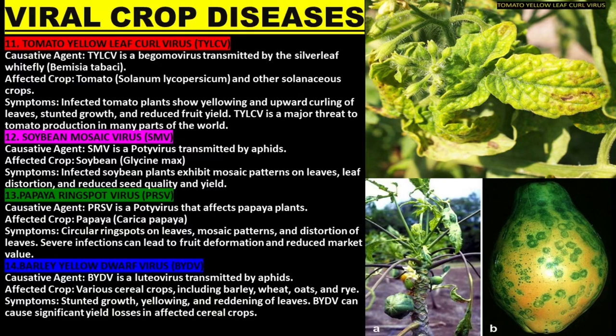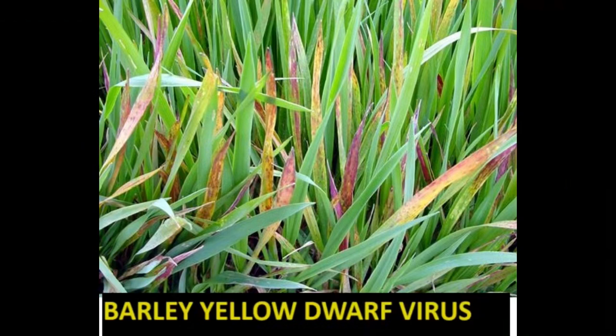Barley Yellow Dwarf Virus is a luteovirus transmitted by aphids. Symptoms include stunted growth, yellowing, and reddening of leaves.